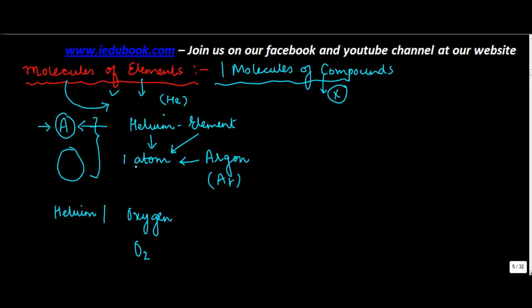Then there could be a second category which is formed by two atoms. Let's say oxygen. So when you see the molecules of oxygen, a molecule of oxygen is composed of two atoms.